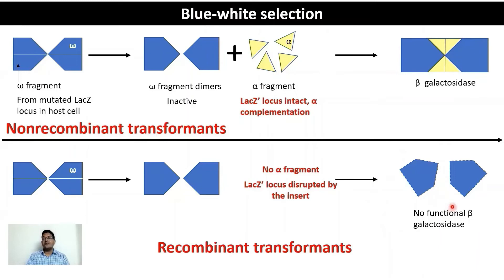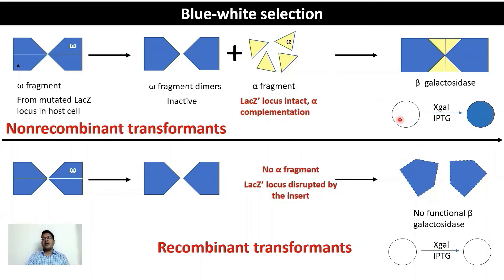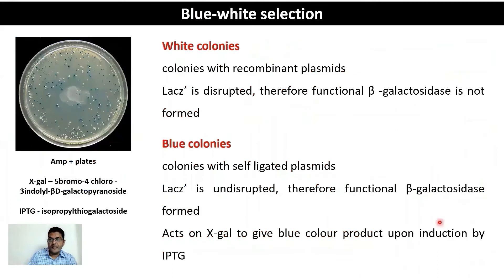To discriminate recombinants from non-recombinants visually, X-gal is used: it is converted into a blue-colored product in the presence of beta-galactosidase. X-gal, along with IPTG (the inducer of the lac operon), is added to the plates. In non-recombinant transformants, functional beta-galactosidase is formed and converts X-gal to a blue color, producing blue colonies. In recombinant transformants, there is no functional beta-galactosidase, so X-gal is not converted and white colonies result.